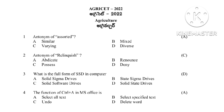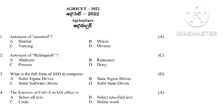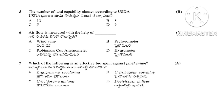Question 5: The number of land capability classes according to USDA — options are 13, 18, 5, and 9 — the answer is B, 8 classes. Question 6: Airflow is measured with the help of — options include wind vane, psychrometer, Robinson Cup Anemometer, and hygrometer. The answer is Robinson Cup Anemometer. Wind vane measures wind direction, and Robinson Cup Anemometer measures wind velocity.